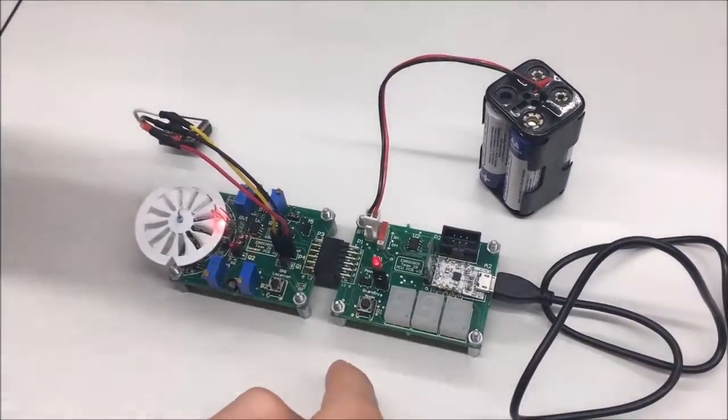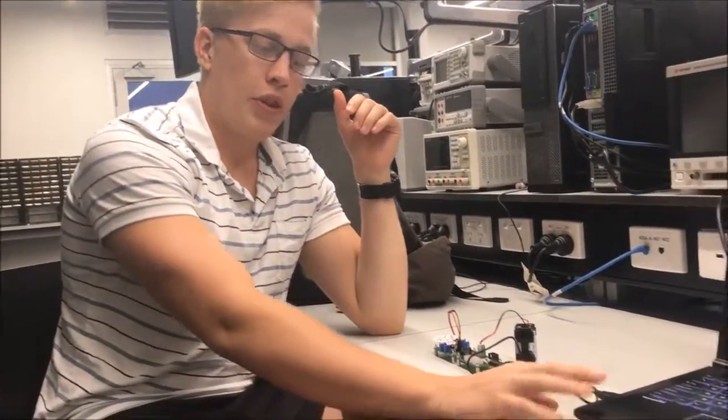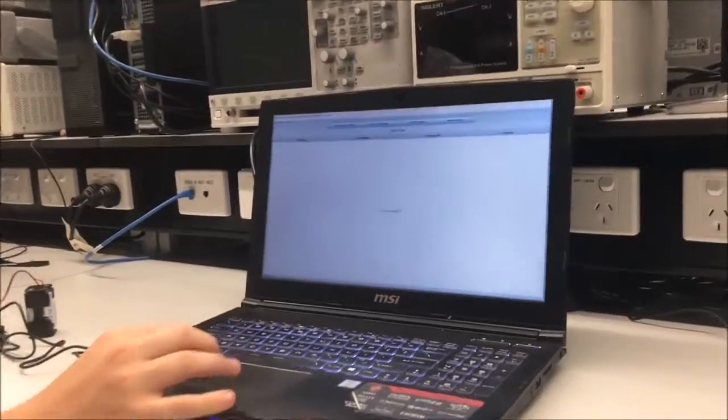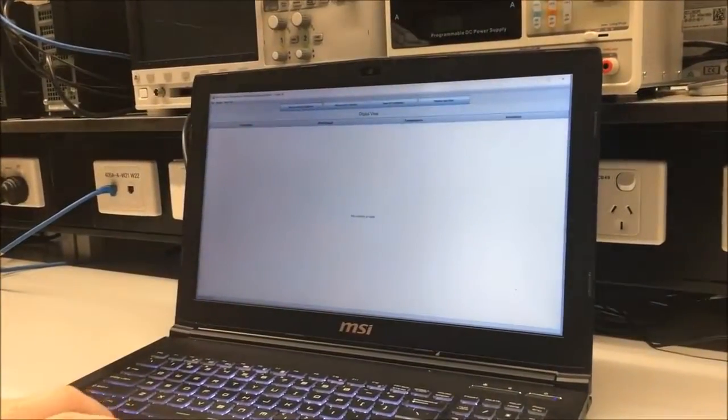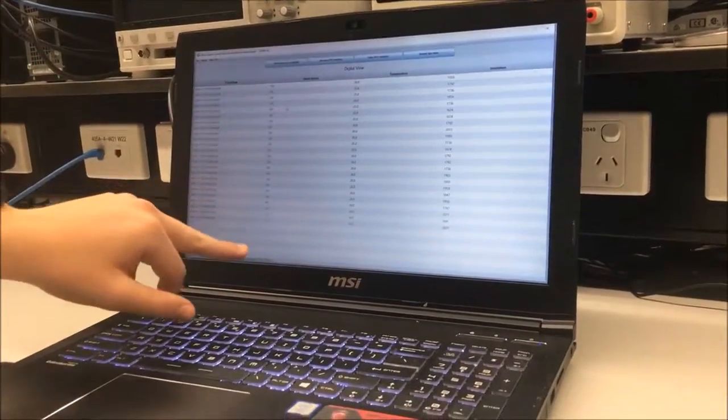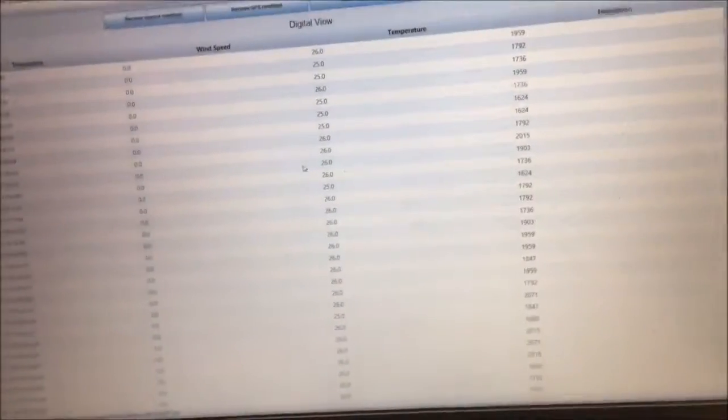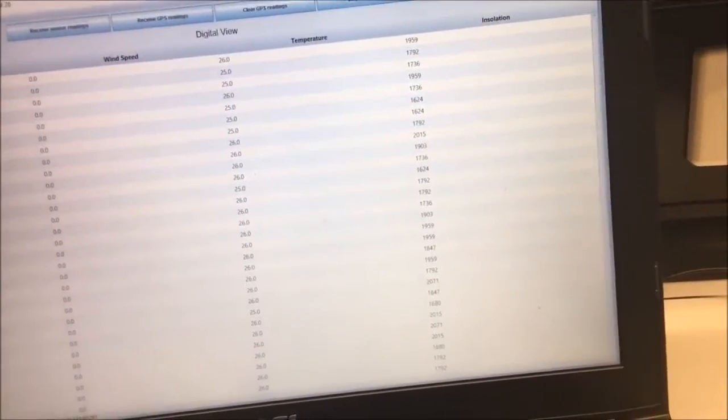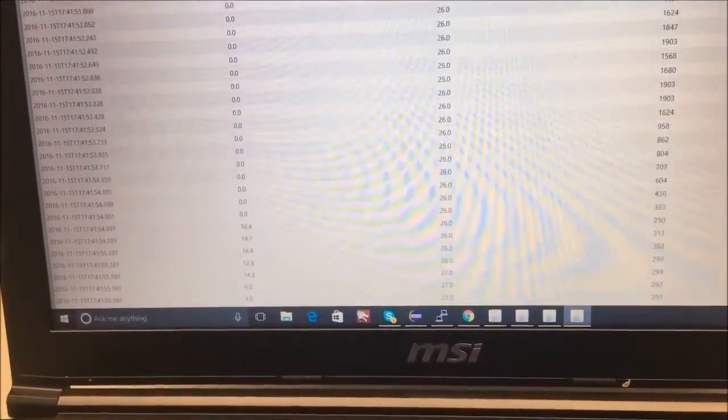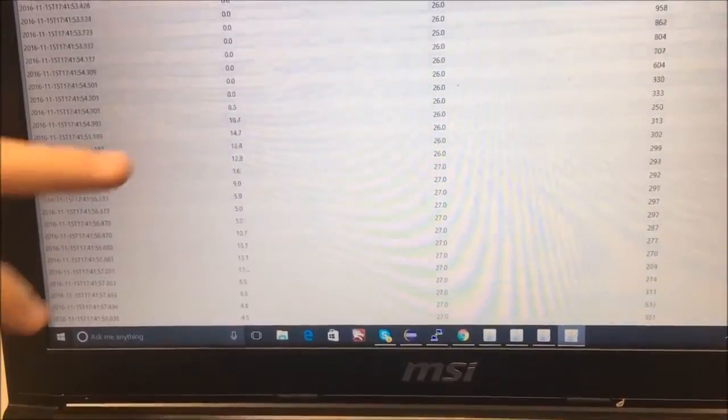So with our weather station plugged in with a USB cable, we can light up the software here and start receiving sensor readings. If I click this button here, we'll start seeing sensor readings flow in. If you zoom in and have a look at the wind speed column, you can see this increase.